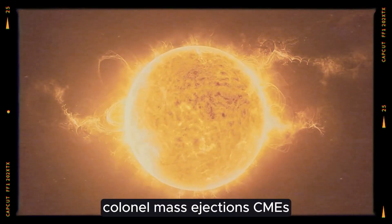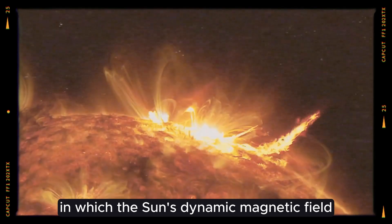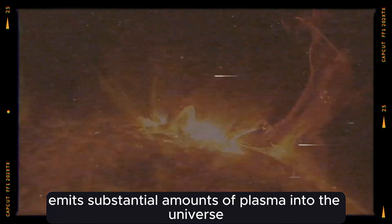Coronal mass ejections, CMEs, are occasional occurrences in which the Sun's dynamic magnetic field emits substantial amounts of plasma into the universe.